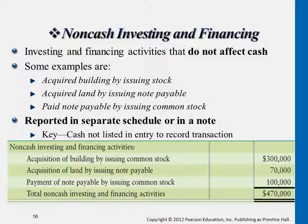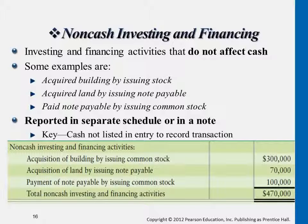Basically, these are activities that are major but have nothing to do with cash inflow and outflow. We still sometimes see companies with a section to report these. For example, if we acquire a building — we purchase a building — but we didn't pay cash; instead we issued common stock to the other party, making the other company part of our company's investors. This sometimes happens, and these are some of the infrequent activities.